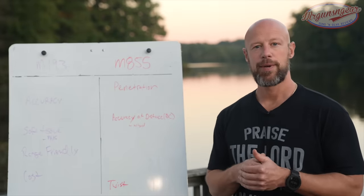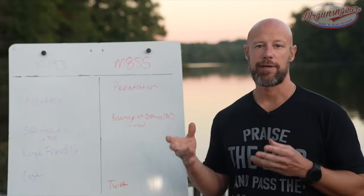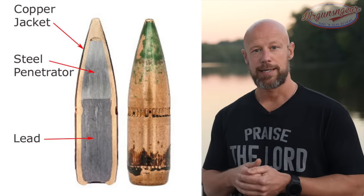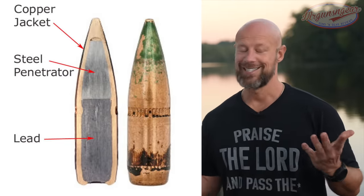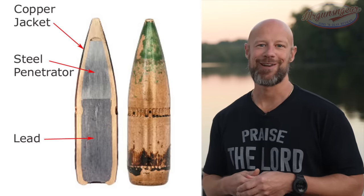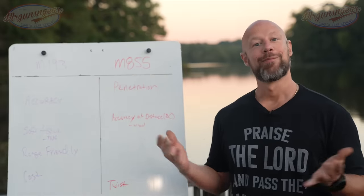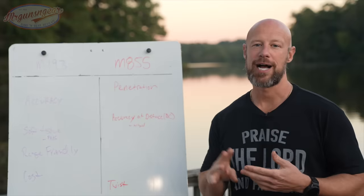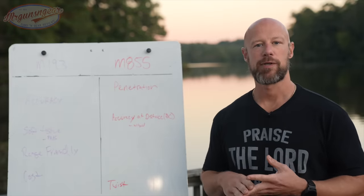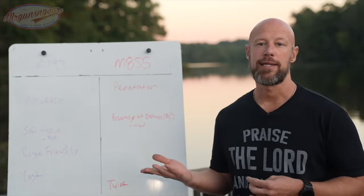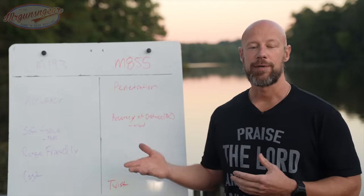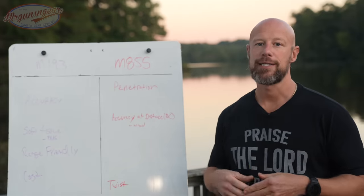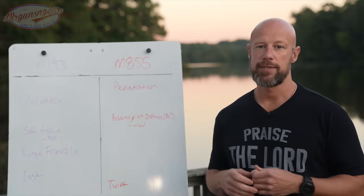In terms of penetration, M855 tends to do better in most scenarios due to that seven grain steel projectile at the end. Some folks claim it's armor-piercing — it's not — but it was developed in part to do better at penetrating a Russian helmet, which was apparently something the military was very concerned with. For light armor, car glass, or if you had a bad guy hiding behind a bookshelf, it's going to do better in terms of penetration than the M193. The M193 went through thick jungles in Vietnam and tended to get deflected very easily.